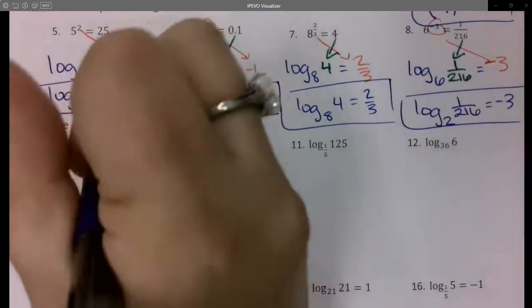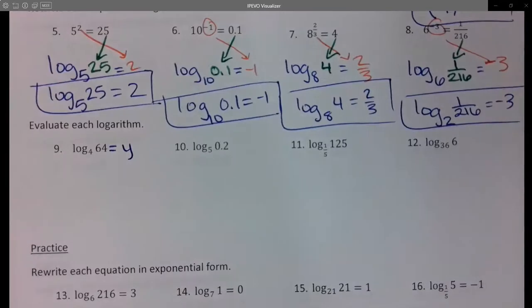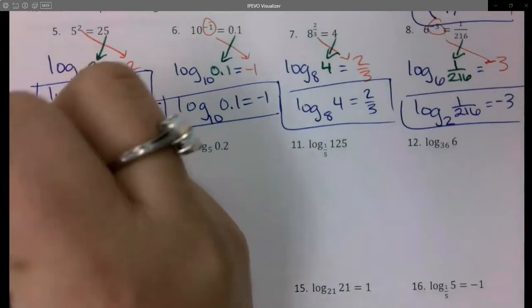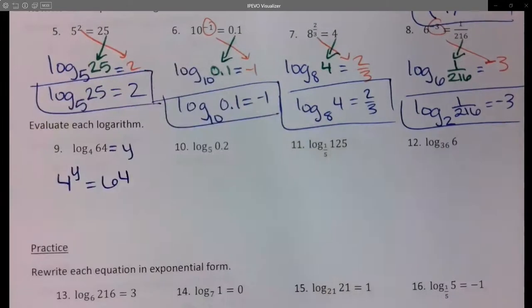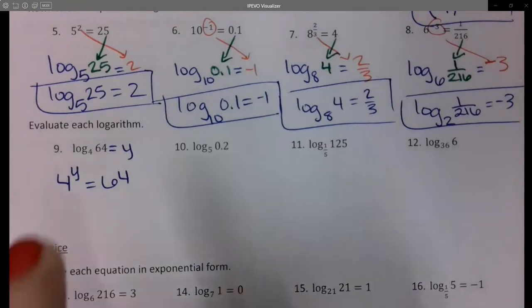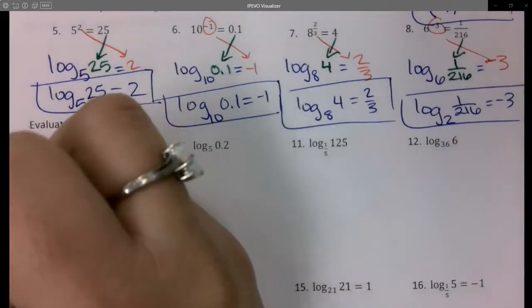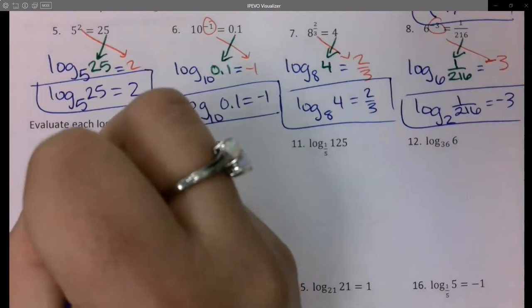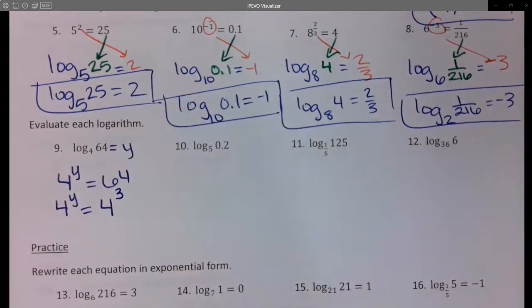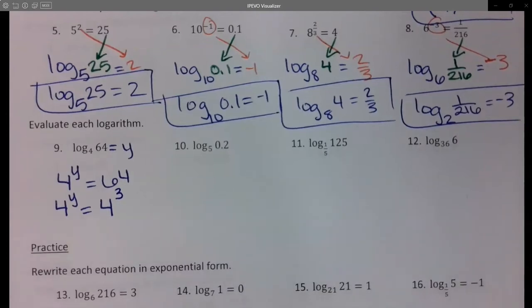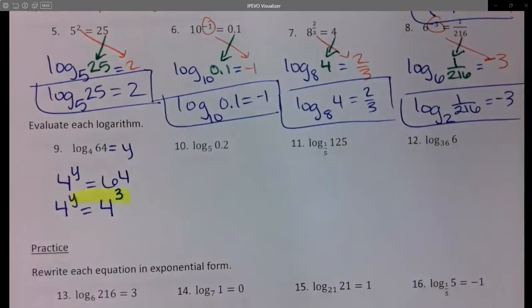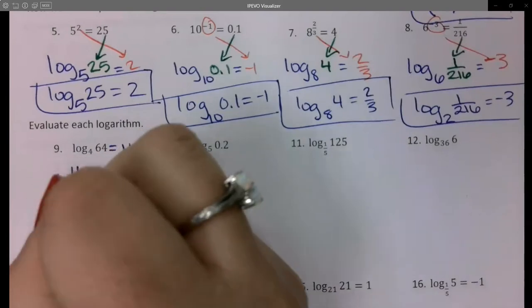These want me to evaluate each logarithm, so what I can do is I can set these equal to y and then rewrite as an exponential function. So I can have 4 to the y equals 64, and I can rewrite 64 as the power of 4. It's the same thing as 4 to the third power. So if I look, I have the same base and I can just set my exponents equal, so my answer here would be y equals 3.